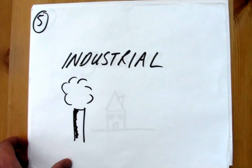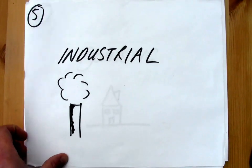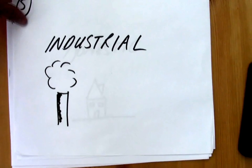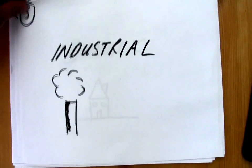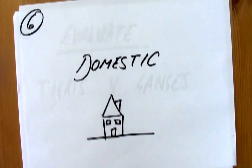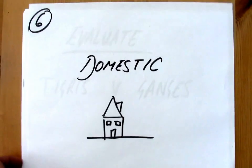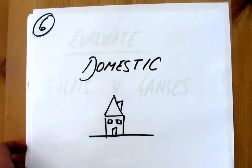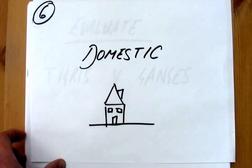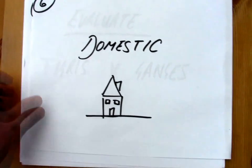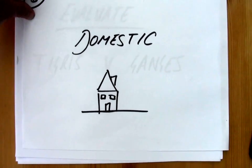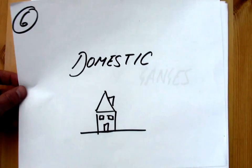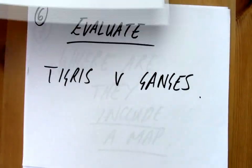We also looked at industrial waste — waste that perhaps comes from factories and different industries. And we looked at domestic waste, so the waste that we have in our own homes, whether it's detergents that we put down our sinks and things we use within our own homes that can eventually find their way into the rivers.